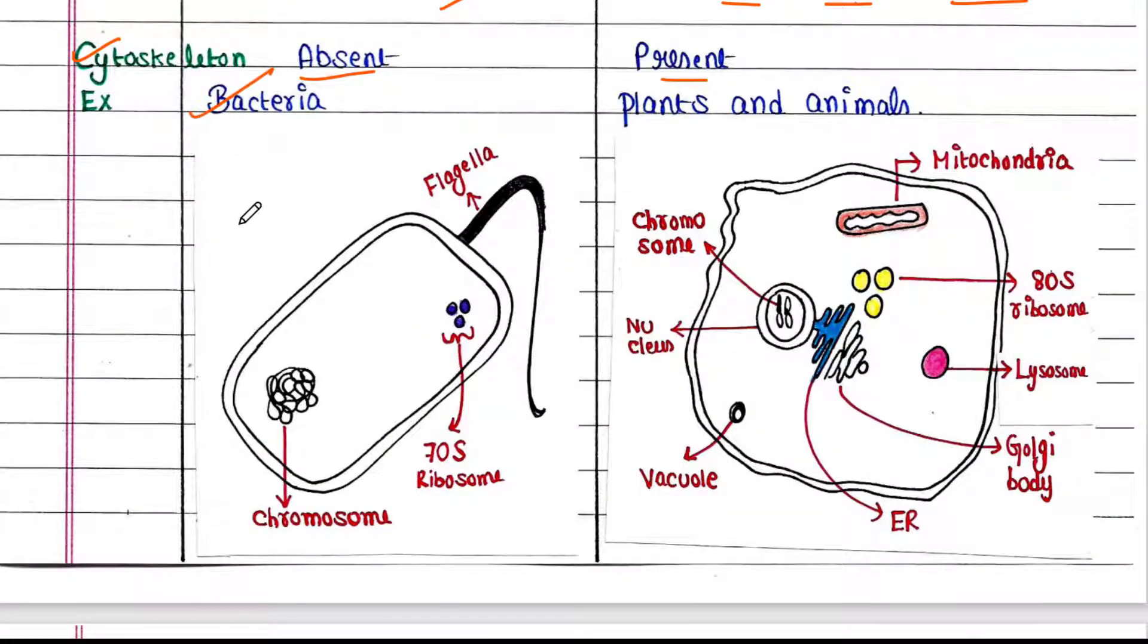Bacteria are prokaryotic cells, and plants and animal cells are eukaryotic cells. This is the typical prokaryotic cell structure. Here it has the naked chromosome, and the place where the chromosome is found is called the nucleoid. It has 70S ribosomes, this is the cytosol, and it has a long flagellum. It helps the bacteria to move.